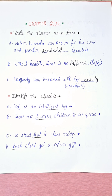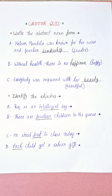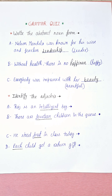Now let's talk about the second part — identify the adjective. What is an adjective? Adjectives are describing words. They tell us more about a noun or a pronoun. There are different types of adjectives: adjective of quality, adjective of number, adjective of quantity, possessive adjective, interrogative adjective, demonstrative adjective, and distributive adjective. So there are seven types of adjectives.